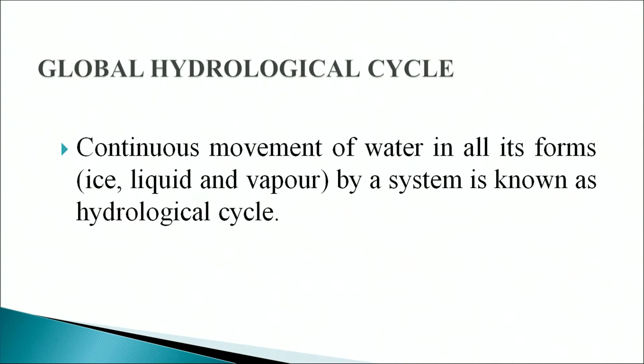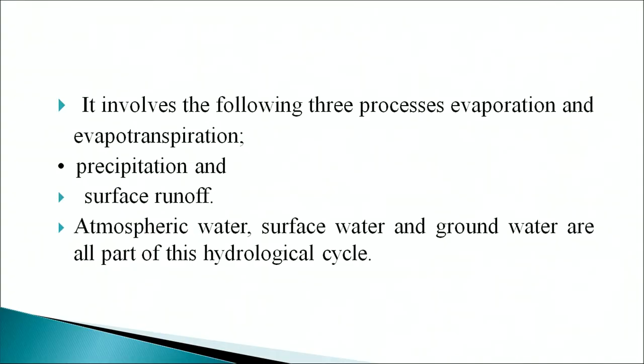The continuous movement of water in all its forms — ice, liquid, and vapor — is known as the hydrological cycle. The hydrological cycle involves three processes: evaporation and evapotranspiration, precipitation, and surface runoff. Atmospheric water, surface water, and ground water are all parts of the hydrological cycle.